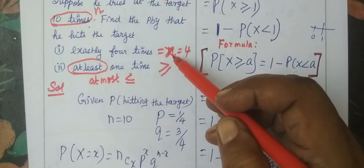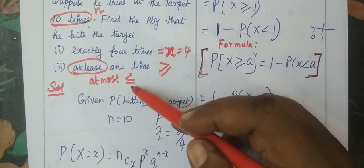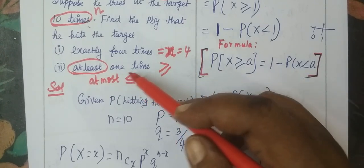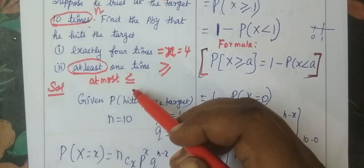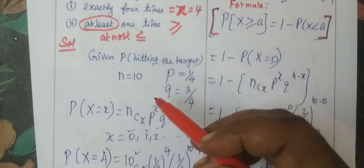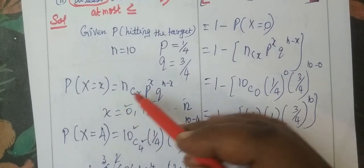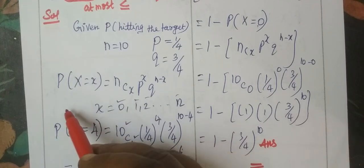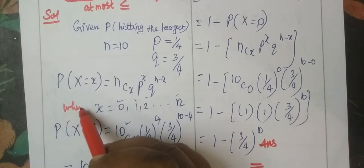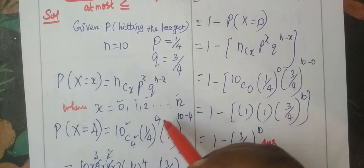At least formula is greater than or equal to, at most formula is less than or equal to. So, we substitute P of X equal to nCx times p to the power x times q to the power n minus x, where X can be 0, 1, 2, 3, etc., up to n.